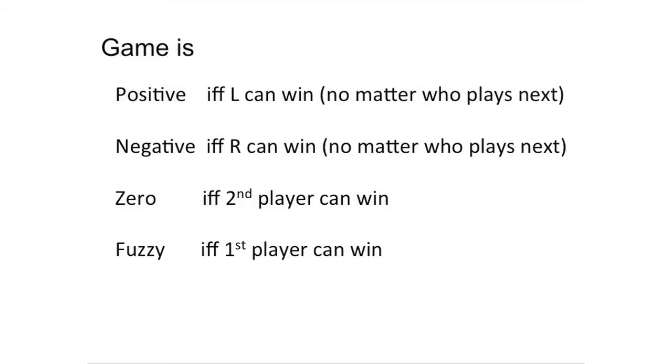In general, we'll say that a game is positive if L can win no matter who plays next, or negative if R can win no matter who plays next, or zero if either player can win if he is the second player. There are also Hackenbush games in which the first player can win. Such games are neither greater than zero, nor less than zero, nor equal to zero. They are confused with zero, and we say they are fuzzy.